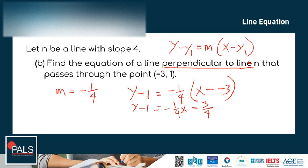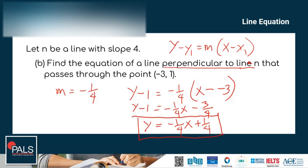Continuing to simplify: y minus 1 equals negative 1/4x minus 3/4. Moving the negative 1 to the other side, we get y equals negative 1/4x plus 1/4. So the equation of the perpendicular line is y equals negative 1/4x plus 1/4.